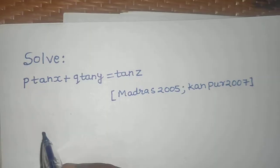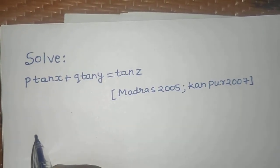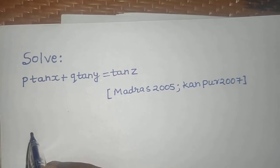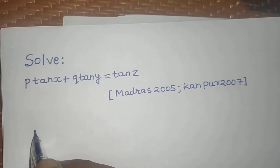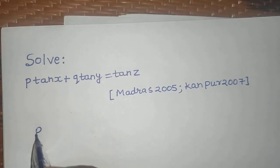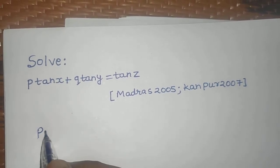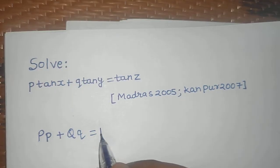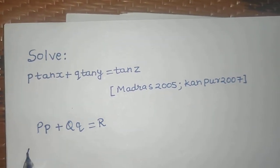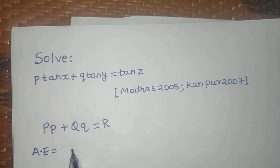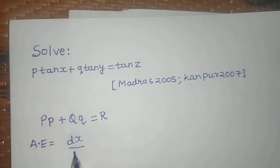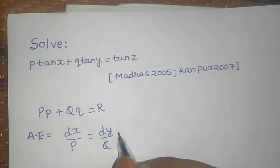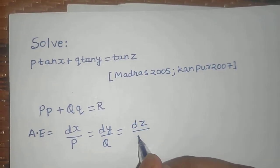We know that the partial linear differential equation of first order can be solved by Lagrange's method. The general format is capital P times small p plus capital Q times small q equals to R. The Lagrange's auxiliary equation is given by dx by capital P equals to dy by capital Q equals to dz by capital R.